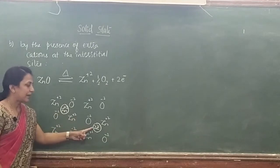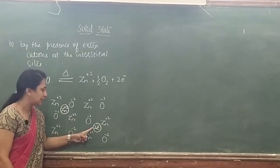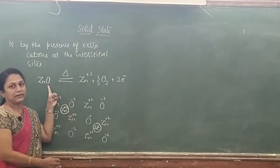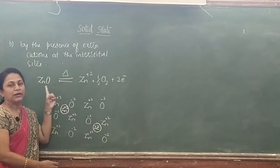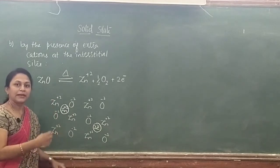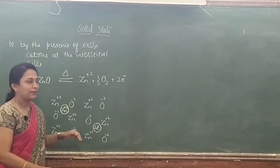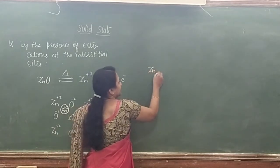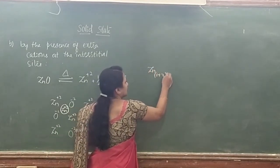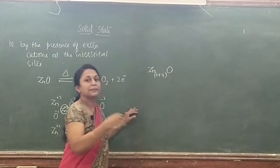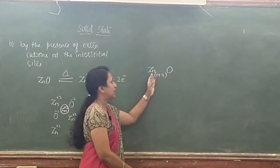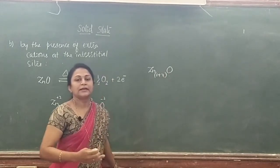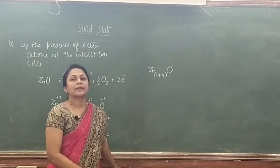The F-centers are responsible for the yellow color of the zinc oxide crystal after heating. The formula of zinc oxide becomes Zn₁₊ₓO — meaning it is a metal excess non-stoichiometric compound, not simply ZnO.